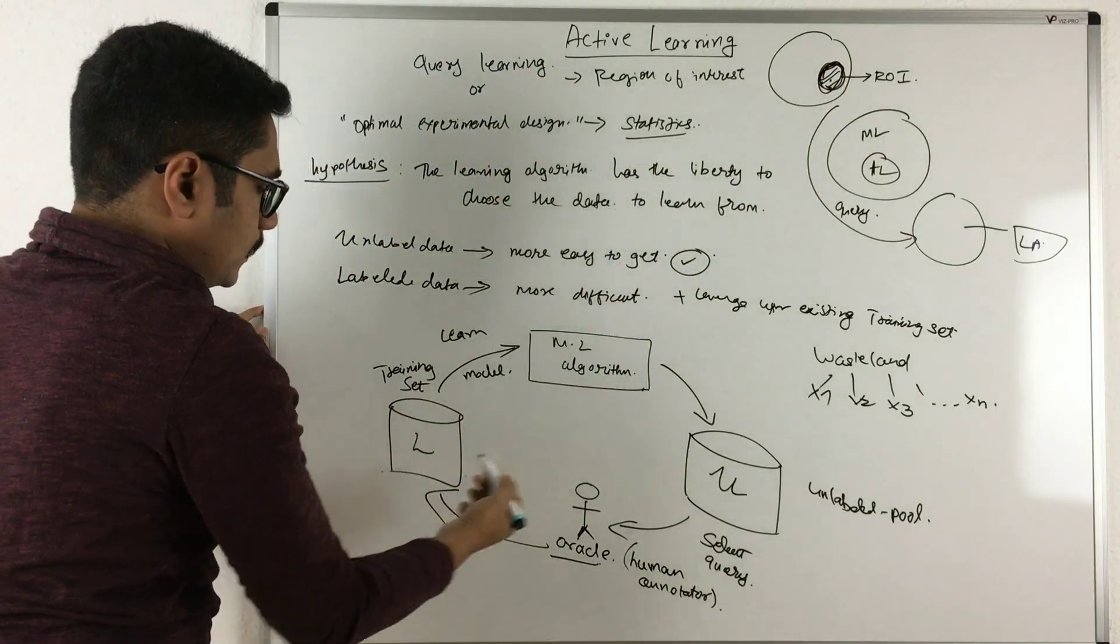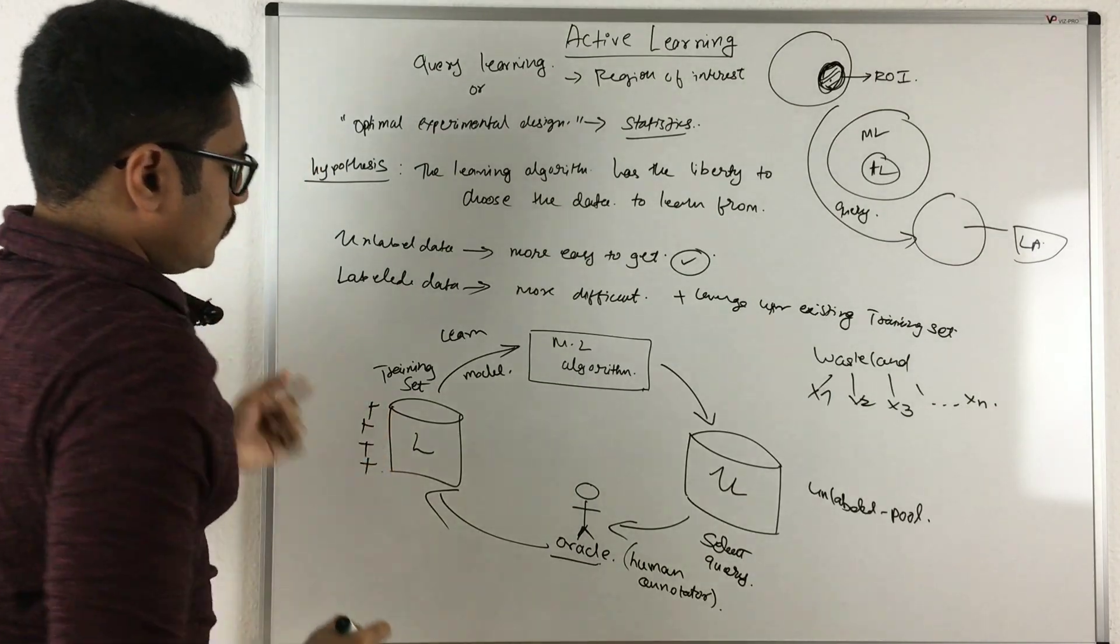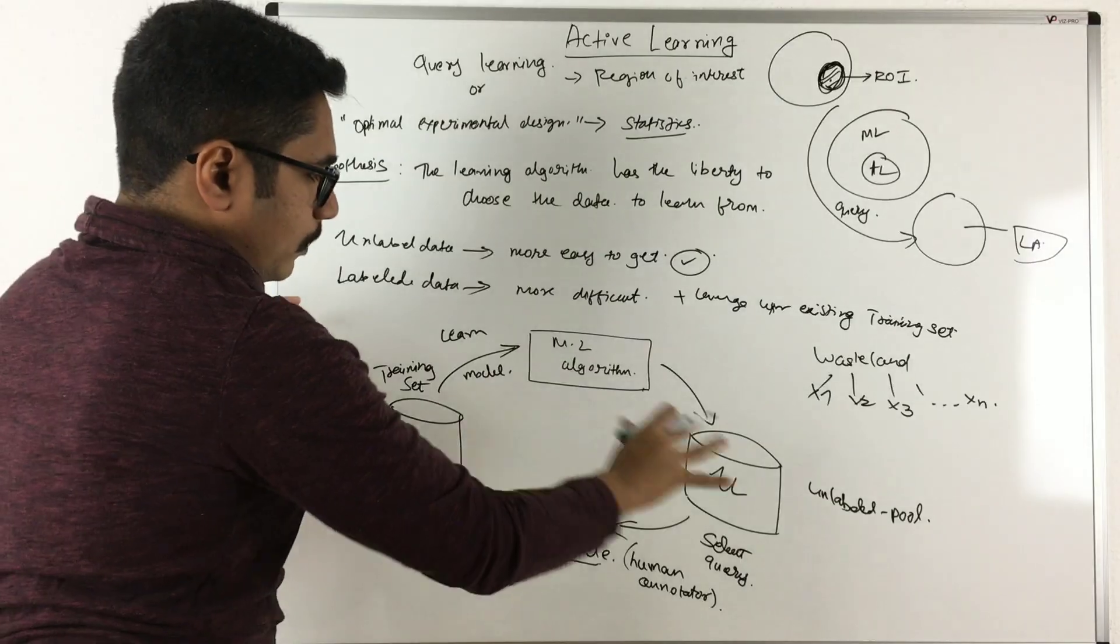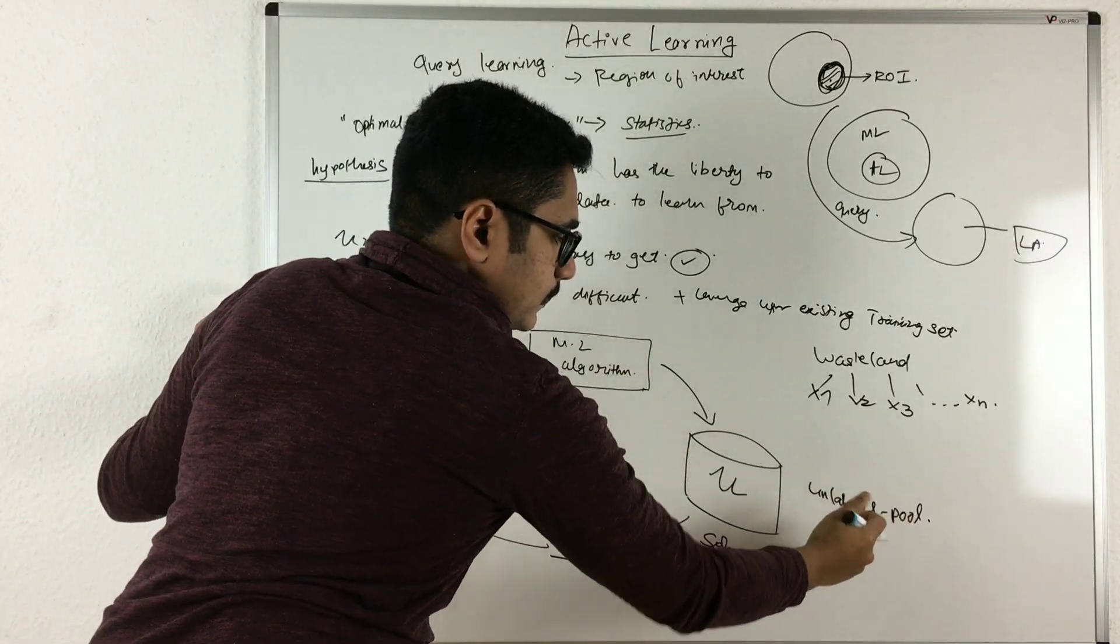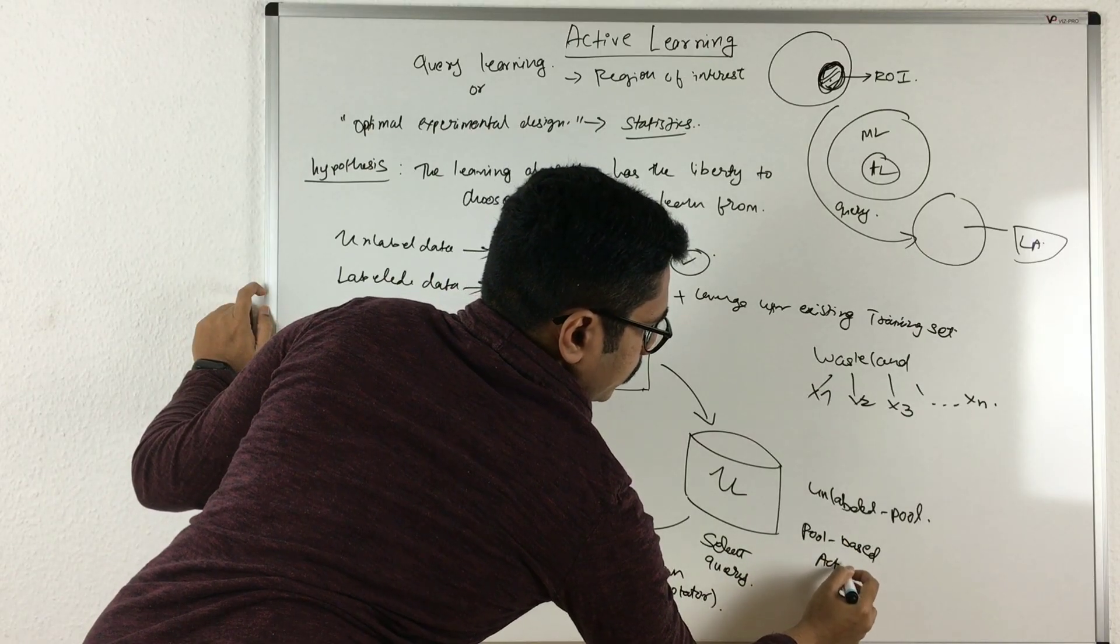In each iteration, whenever you get new information, what you basically do is you try to refine or leverage your training set. Now this type of block diagram which I have drawn here, where I have considered a pool, is called pool-based active learning.